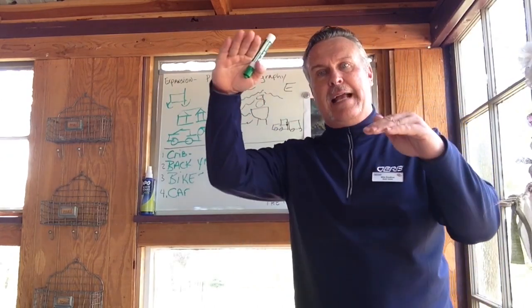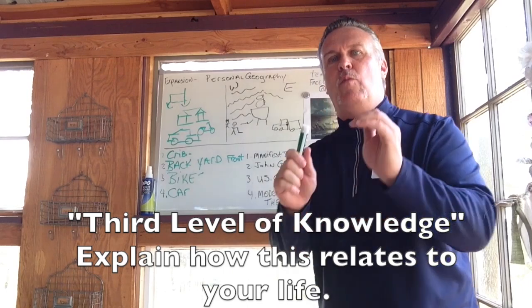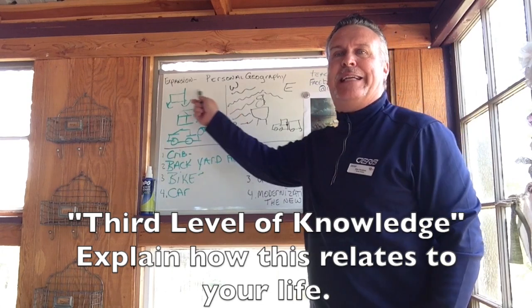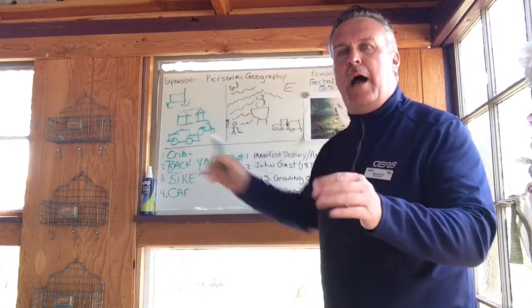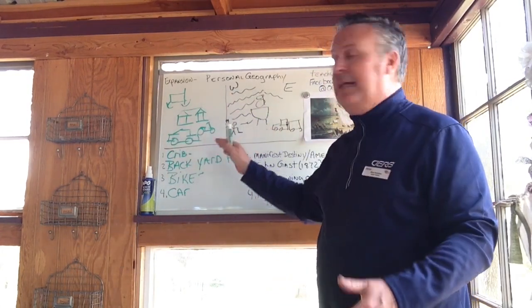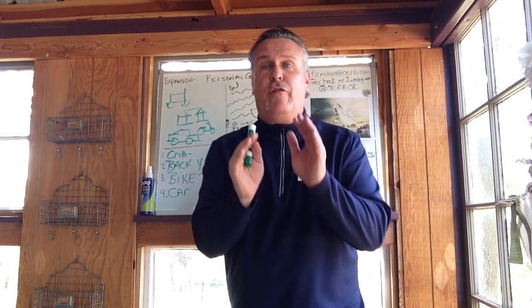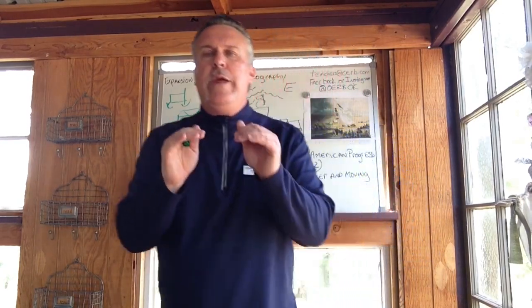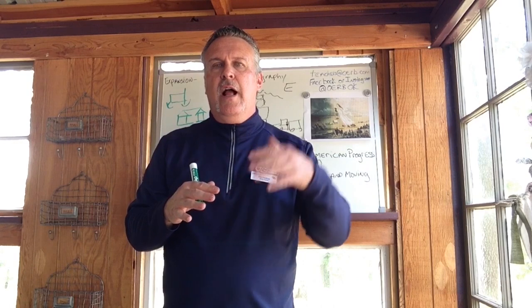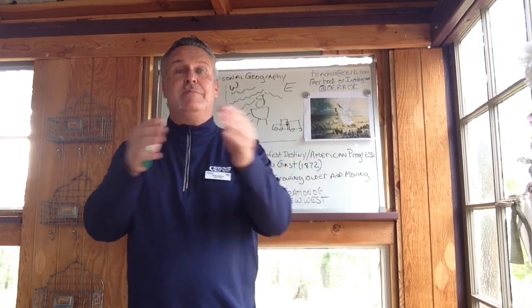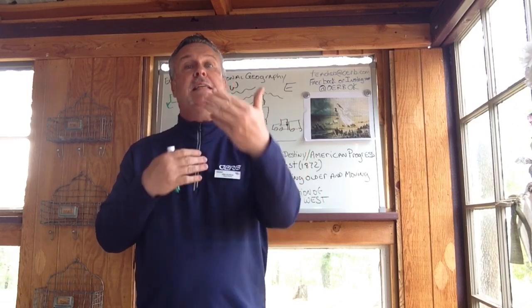That would be the second level of knowledge. The third level is to get them with a friend, a partner, or you as the teacher, to have them explain it and match up how their life relates to Manifest Destiny or Expansionism. The beautiful thing about that is when we do that as educators, they're going to always remember that — the details of it. It's such an honor to hear them talk to their friends about their drawings and their stories, and it opens up your classroom.